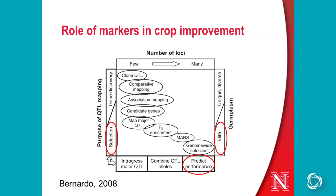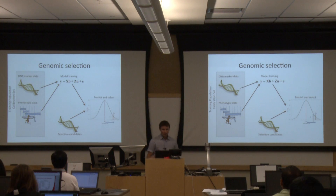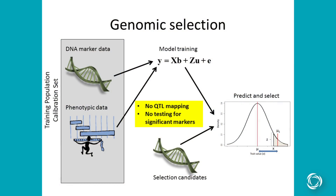The role of genomic selection in the big scheme of markers and crop improvement is simply to provide predictions. Typically we're going to be using it in a breeding program, using the predictions for making selections on elite germplasm that makes up our breeding program.